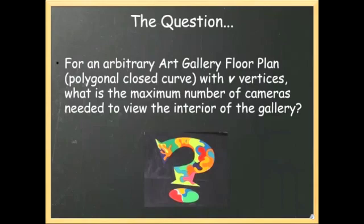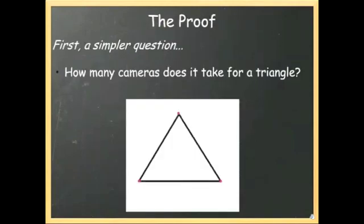Now we're ready for the big question that the art gallery theorem attempts to answer. For an arbitrary art gallery floor plan with V vertices, what is the maximum number of cameras needed to view the interior of the gallery? Remember, the idea here is that we want to view the gallery with as few cameras as possible. But what the theorem does is to give us a worst-case scenario. It gives us a formula for the absolute maximum number of cameras that would possibly be needed. We're going to answer that question in a moment, but first let's think about a simpler question.